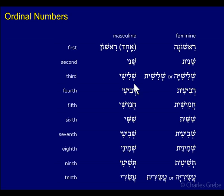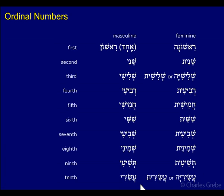The feminine ordinals have the 'i' just like the masculine, which seems to mark the ordinal aspect, and then the Tav marks the feminine. So Sheni becomes Shenit, Shelishi becomes Shelishit — and there's also the option of Shelishiyah. Then: Revi'it, Chamishit, Shishit, Shevi'it, Sheminit, Teshi'it, Asirit or Asiriyah. So the masculine has 'i' endings; the feminine ends in Tav or 'a,' which are endings we've seen for feminines.